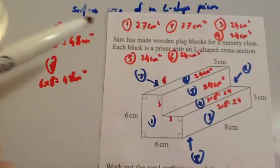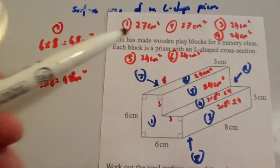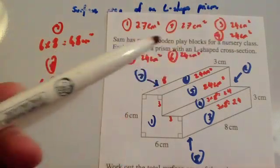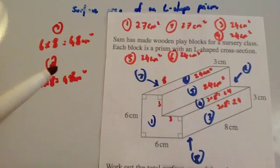Obviously, whenever you show your work on this, I would show your method a lot more clearly than I have now. So we're going to add our 27, our 27, our 24, 24, 24, and 24, our 48, and our 48. And that would be the total surface area of this L-shaped prism.